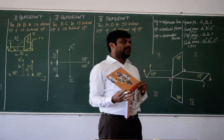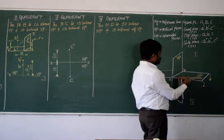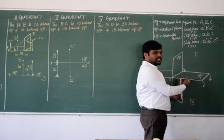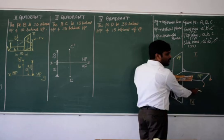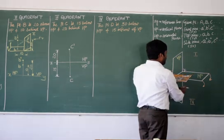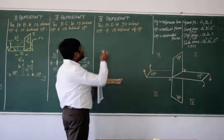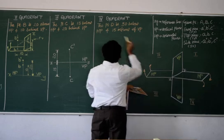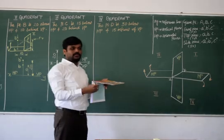Okay, let's work out the fourth quadrant — the final quadrant. Coming to the fourth quadrant: how you name the fourth quadrant with respect to HP and VP — the point is below HP and in front of VP. The question is framed here: the point D is 30 below HP and 15 in front of VP.